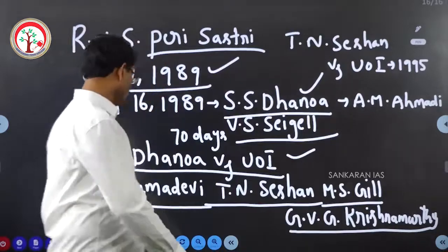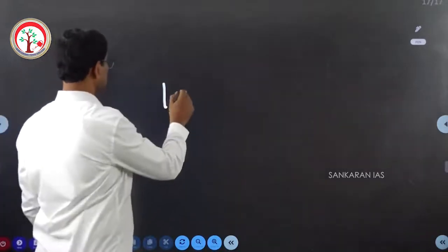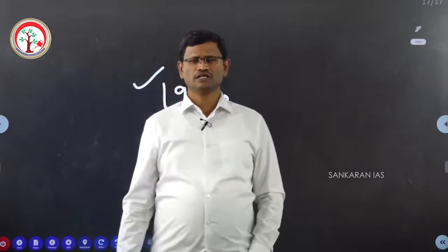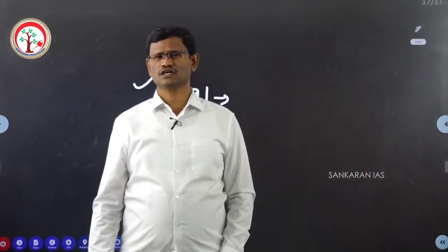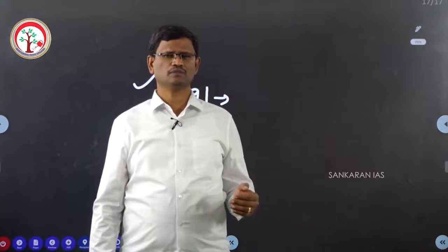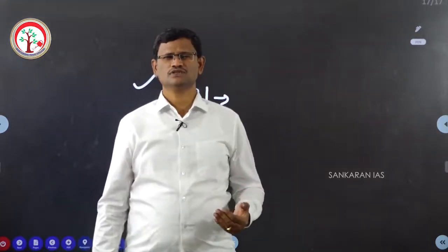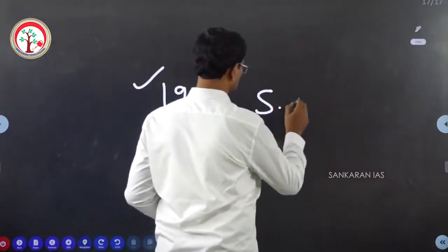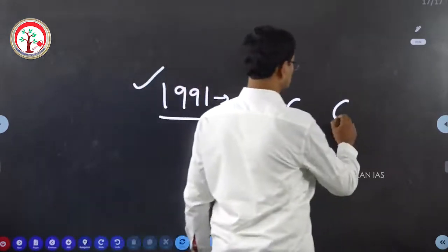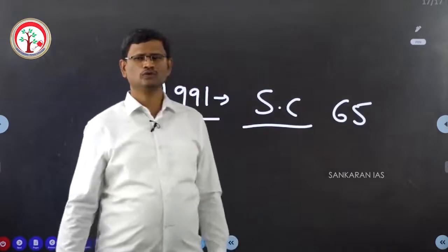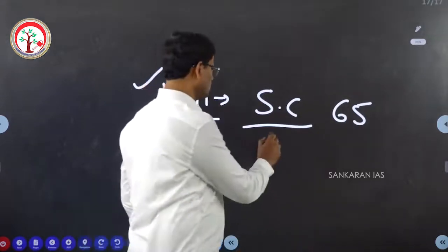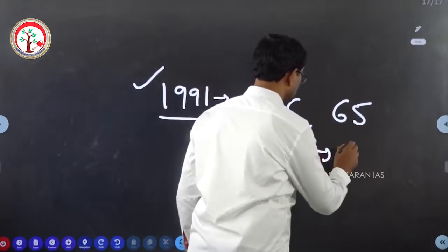In 1991, there was a law enacted by the Indian Parliament: the Chief Election Commissioner and Other Election Commissioners Conditions of Service Act 1991. According to this legislation, the Chief Election Commissioner was given the status of a Judge of the Supreme Court and the retirement age was fixed at 65 years. The two Central Election Commissioners were given the status of a Judge of the High Court and their retirement age was fixed at 62 years.